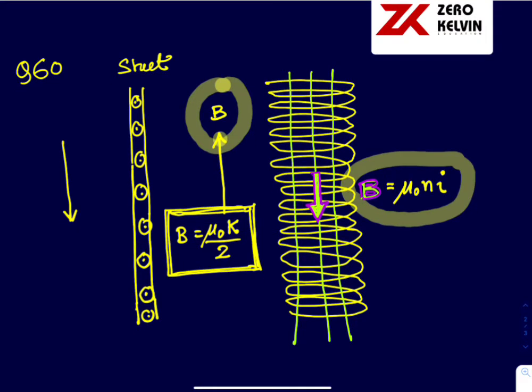So that means to cancel out, these two are equal. That is mu0K by 2 is equal to mu0Ni. That implies I is equal to K divided by 2N.